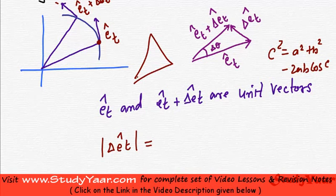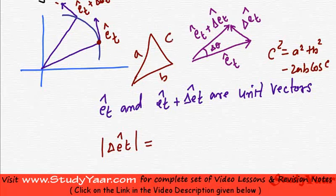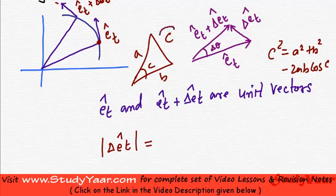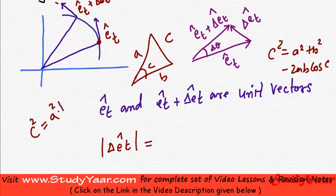If you have a triangle like this, if this is your A, this is your B, this is your C and this angle is C, so your C is given as C squared is equal to A squared plus B squared minus 2AB cos C.